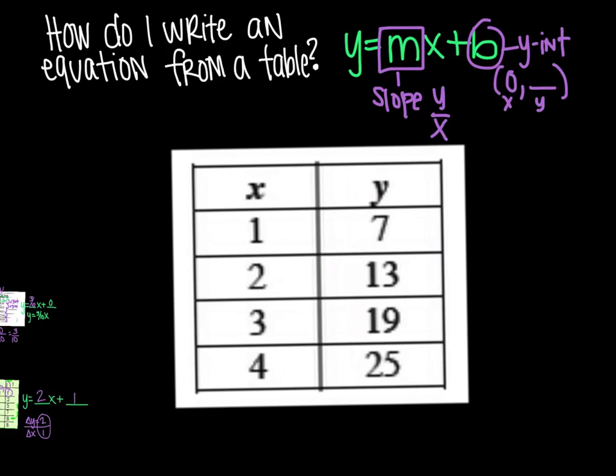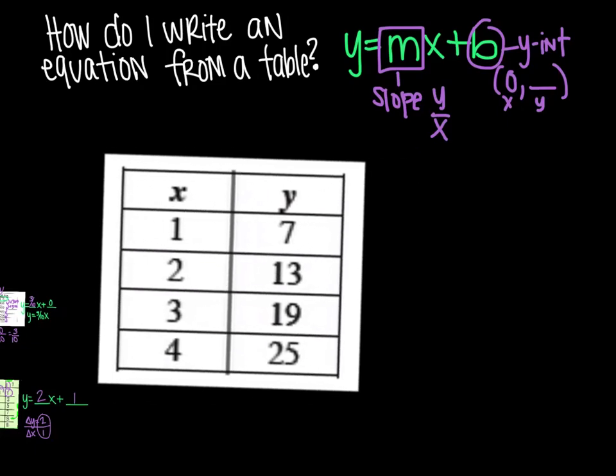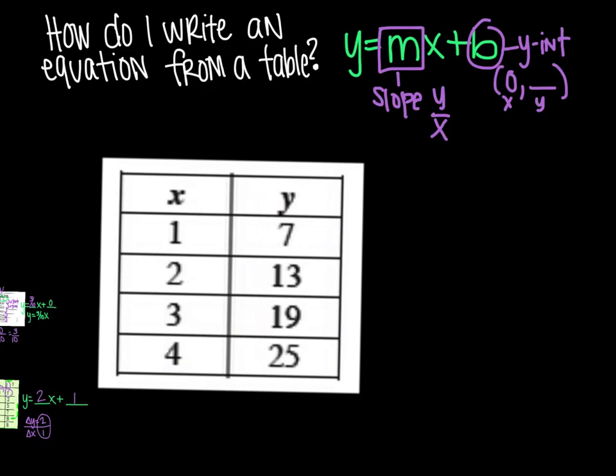Last example for you. This one, you might notice right away that there's no 0. But we'll address that in just a second. Which is what makes this table unique. You're still going to use y equals mx plus b. So finding the m and the b.